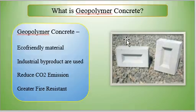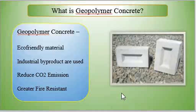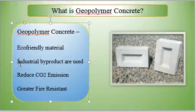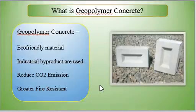Now let us move on to what geopolymer concrete actually is. As I have studied, there is not much visible difference at first glance, but if you analyze how it is made, its characteristics, and its benefits, you will see that geopolymer concrete and normal concrete are two very different types. First, geopolymer concrete is an eco-friendly material. Industrial byproducts like fly ash, which is a byproduct from thermal power plants, can be used to produce this concrete.